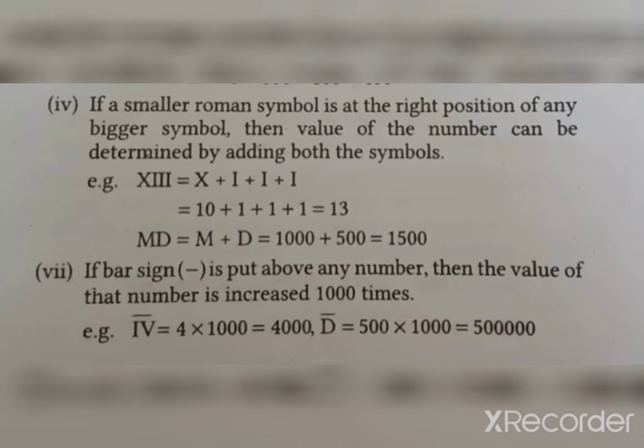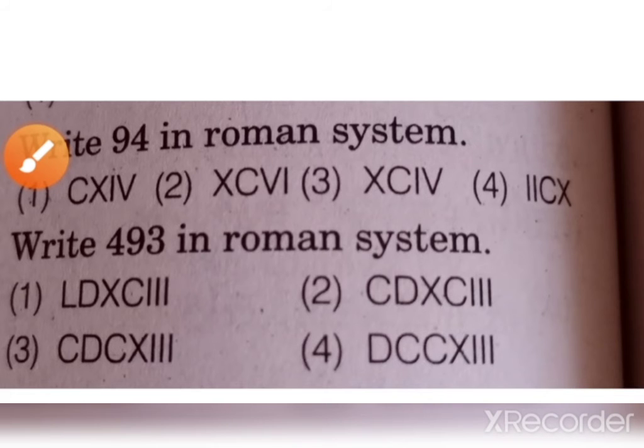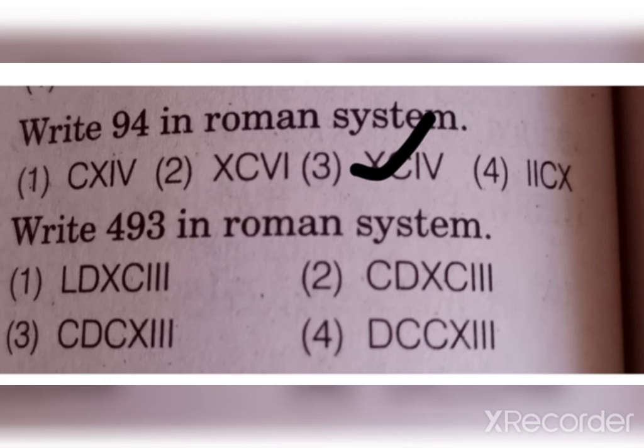Write 94 in Roman system. How to calculate? 94 in Roman system, we know XC is 90, and IV is 4. So XCIV is the answer.